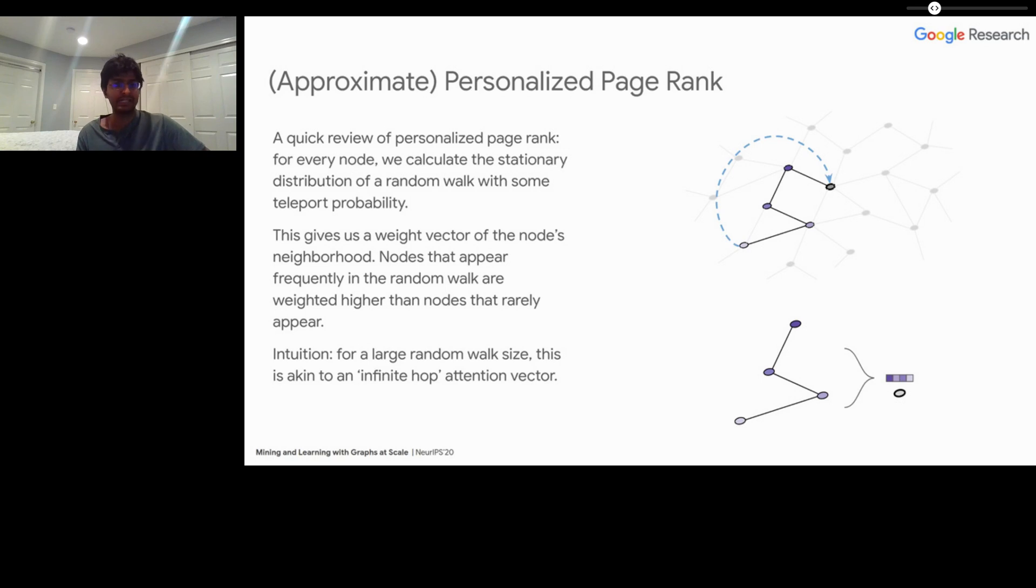I think the personalized PageRank really neatly or elegantly solves both of these problems. So a quick review of what personalized PageRank or PPR actually is. For every node, we calculate the stationary distribution of a random walk with some teleport probability, and this gives us a weighted vector for the node's neighborhood. Nodes that appear frequently in these random walks are weighted higher than nodes that rarely appear. To build some intuition from an information perspective, if you have a really large random walk size, you can think of this as an infinite hop attention vector where the nodes that end up being really frequent in the random walk are weighted much higher in the underlying attention vector for a given seed node.